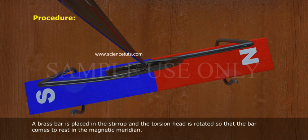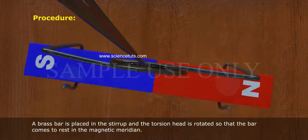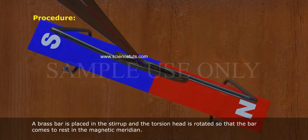A brass bar is placed in the stirrup and the torsion head is rotated so that the bar comes to rest in the magnetic meridian.